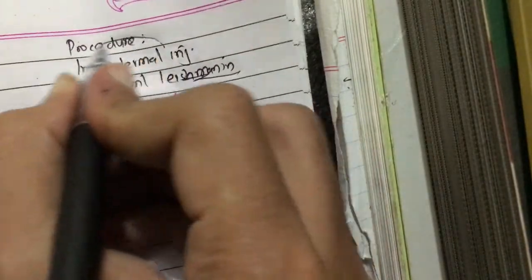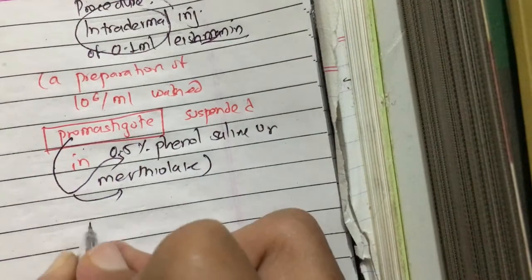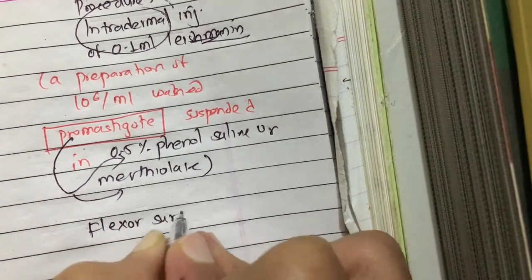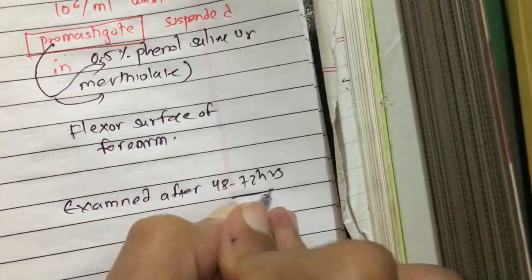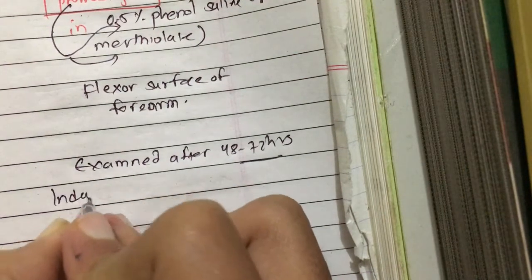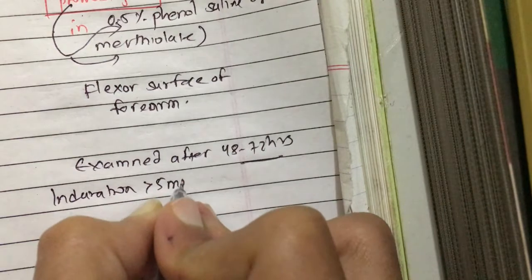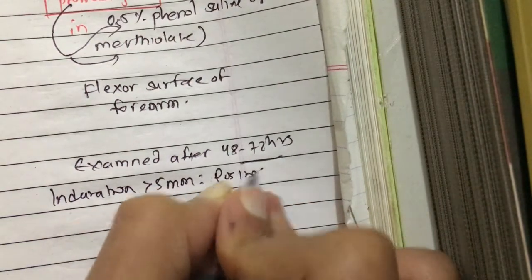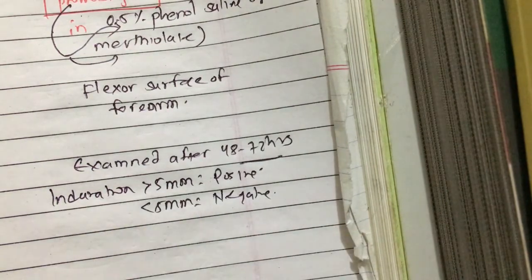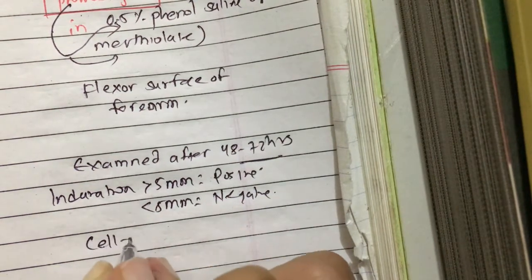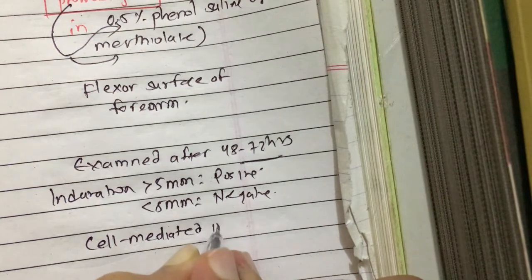The leishmanin is injected intradermally on the flexor surface of the forearm and examined after 48 to 72 hours. If the induration is greater than 5 mm, it is considered positive; if less than 5 mm, it is considered negative. This test detects the cell-mediated immune status of the patient.